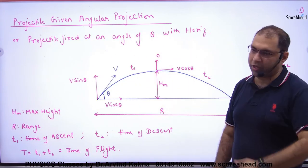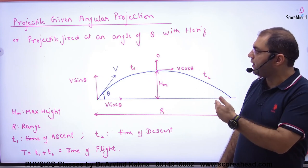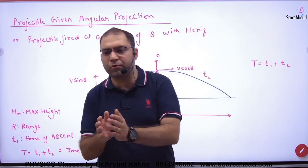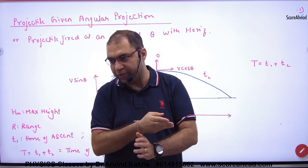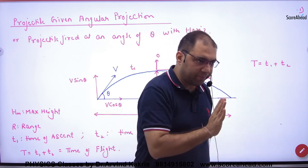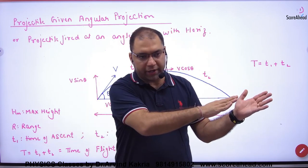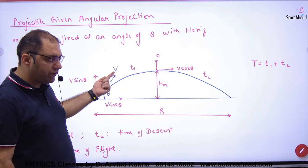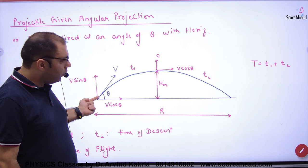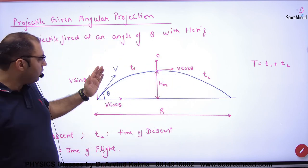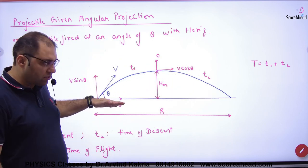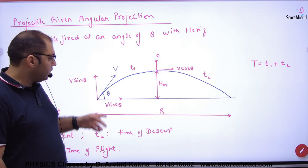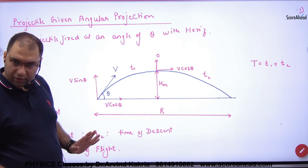Projectile given angular projection — projectile fired at an angle of theta with horizontal. Previously we had thrown a projectile from the top of a building and it fell straight down. Now we will do ground-to-ground projection. This means the projectile is launched with velocity V at an angle of theta, hitting the ground. This velocity V has two components: V cos theta in the x-axis and V sin theta in the y-axis.